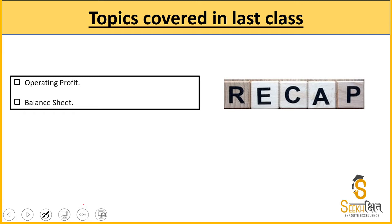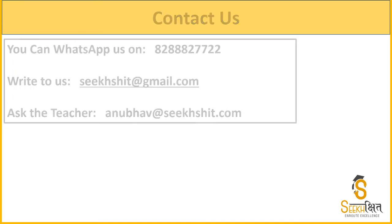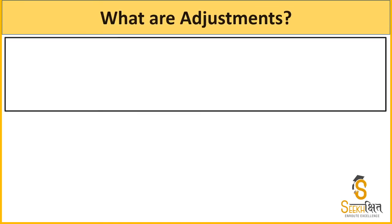Operating profit कैसे निकलता है, balance sheet की presentation कैसे होती है, companies की balance sheet थोड़ी अलग होती है — ये सब चीज़ें cover करी थीं। आज की class में हम cover करेंगे कि financial statements ready होने के बाद भी कुछ adjustments होती हैं, और उन adjustments को हम अपने accounting में कैसे treat करते हैं।